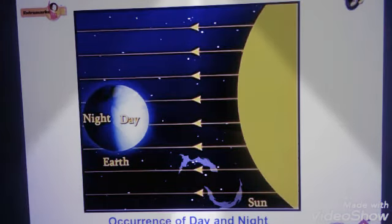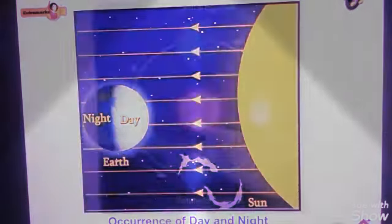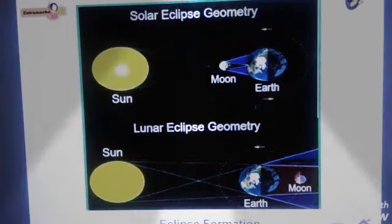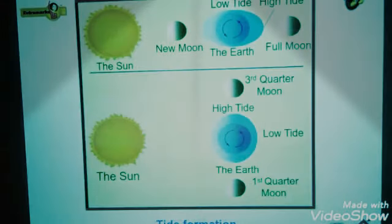Some of the phenomena in science are occurrence of day and night, occurrence of seasons, formation of eclipses, formation of rainbow, formation of tides etc.